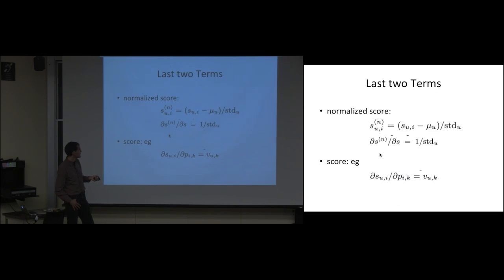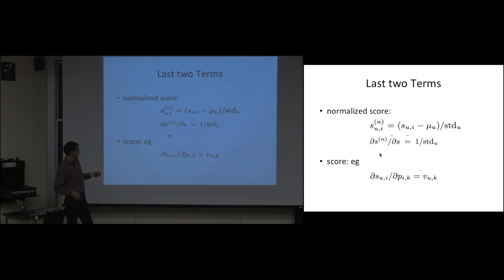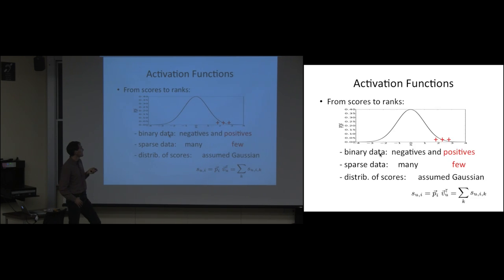The normalized score for a user is computed by taking all scores for all items, calculating the mean and standard deviation, and normalizing — so the derivative is just 1 divided by the standard deviation. The derivative of the score with respect to a model parameter is also simple: with respect to P, we just get the user vector (the sum of Q vectors). The interesting part is the activation function mapping scores to ranks.